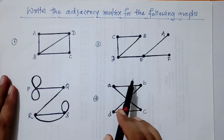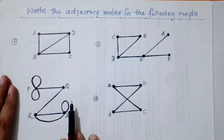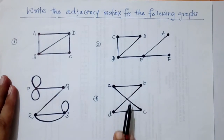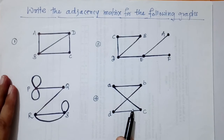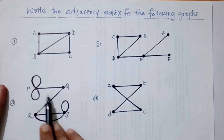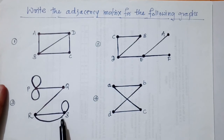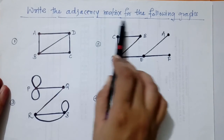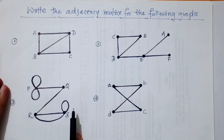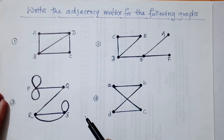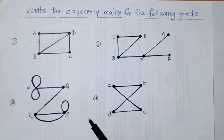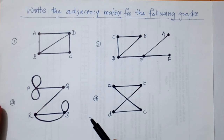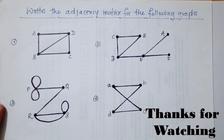Next, we have four given graphs — three simple graphs and one multigraph, since it has loops and parallel edges. You can try finding the adjacency matrix for all these graphs and check the observations we have discussed. This is all about the adjacency matrix for undirected graphs. Thank you.